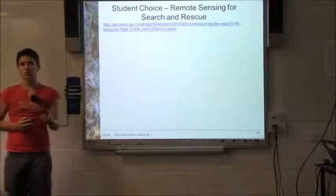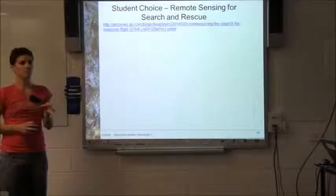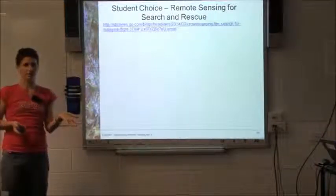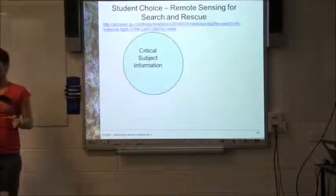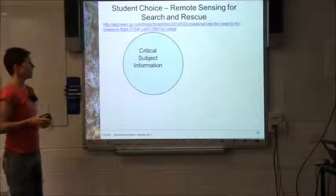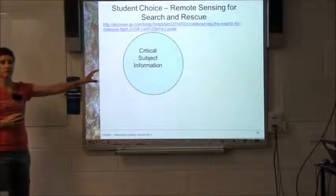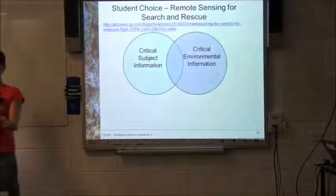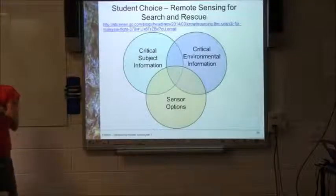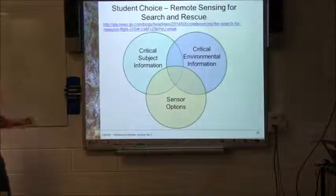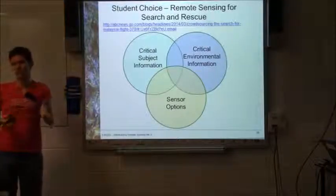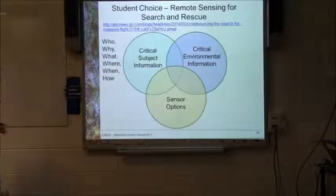We're looking at search and rescue for remote sensing, based around the idea of the missing Malaysian Airlines plane. The question is: can we use remote sensing to find the plane? There are a couple of components we need to consider — and this is for any remote sensing project, not just search and rescue. We need these all to match up to consider remote sensing as a valuable tool in that particular situation.